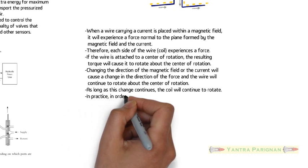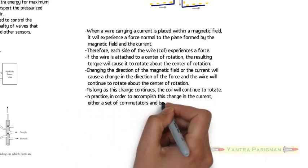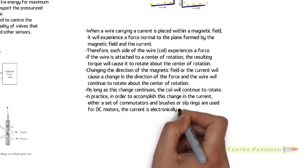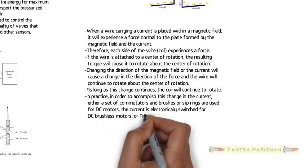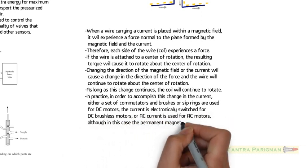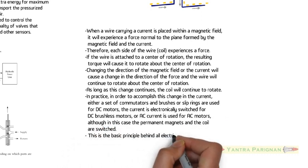As long as this change continues, the coil will continue to rotate. In practice, in order to accomplish this change in the current, either a set of commutators and brushes or slip rings are used for DC motors, the current is electronically switched for DC brushless motors, or AC current is used for AC motors, although in this case the permanent magnets and the coil are switched.